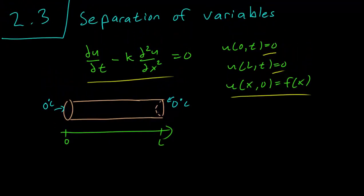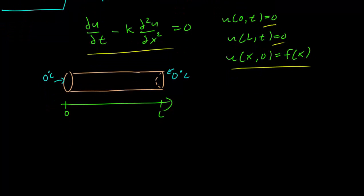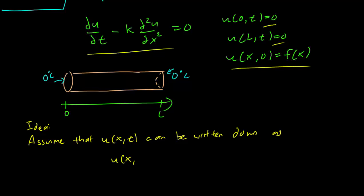So before we proceed, let us start by assuming, we start with an idea. Assume that the solution u(x,t) can be written down as u(x,t) equals F(x) times G(t). So in other words, we assume that we can separate out the x variable and t variable in our solution.